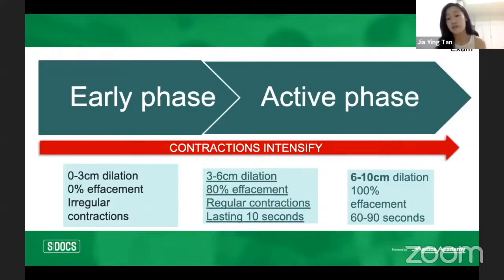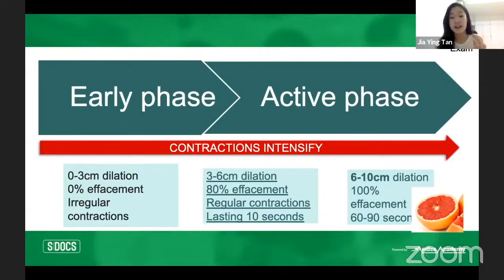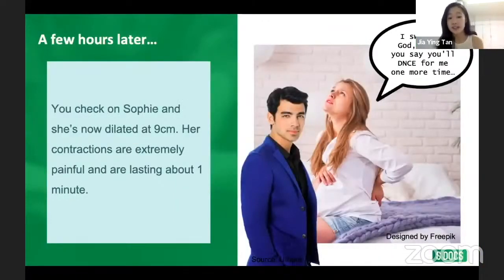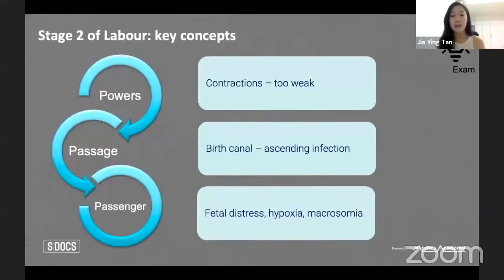The goal is 100% effacement. Once contractions are lasting 60 to 90 seconds, you're at the end of stage one and progressing to stage two. The magic number is 10 cm — the size of a grapefruit — and that's when you're ready for stage two. Checking in with Sophie: she's now dilated at 9 cm, her contractions are extremely painful and lasting about a minute, placing her at the end of stage one active phase.